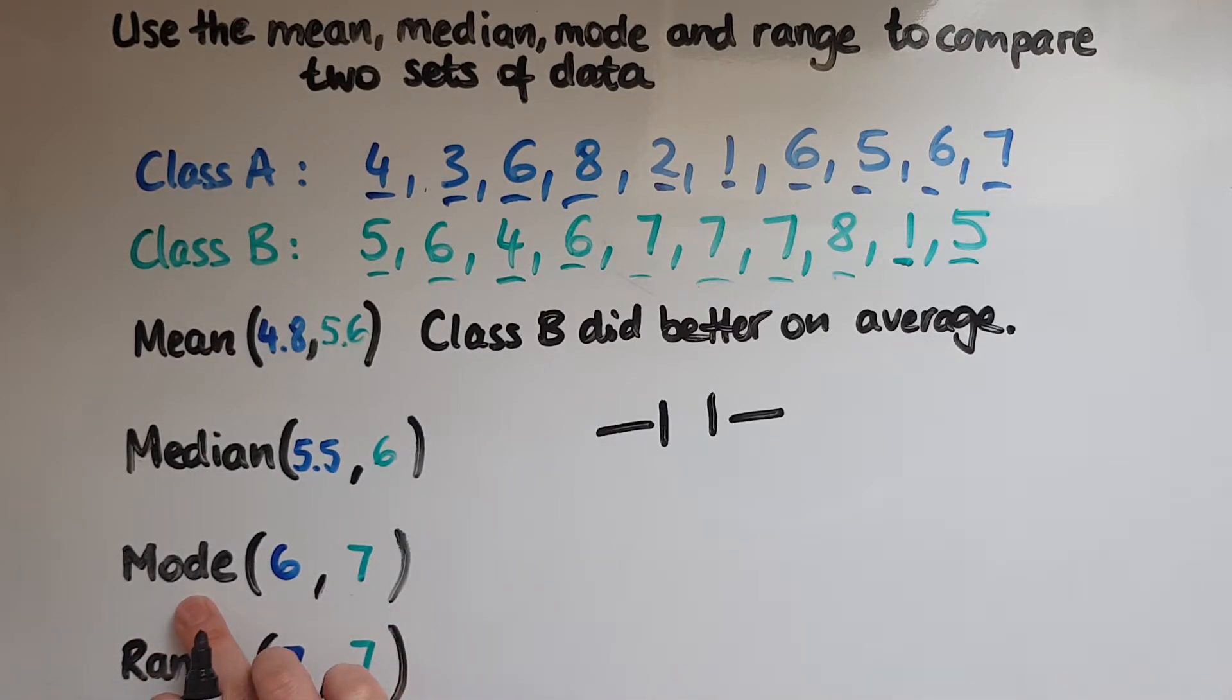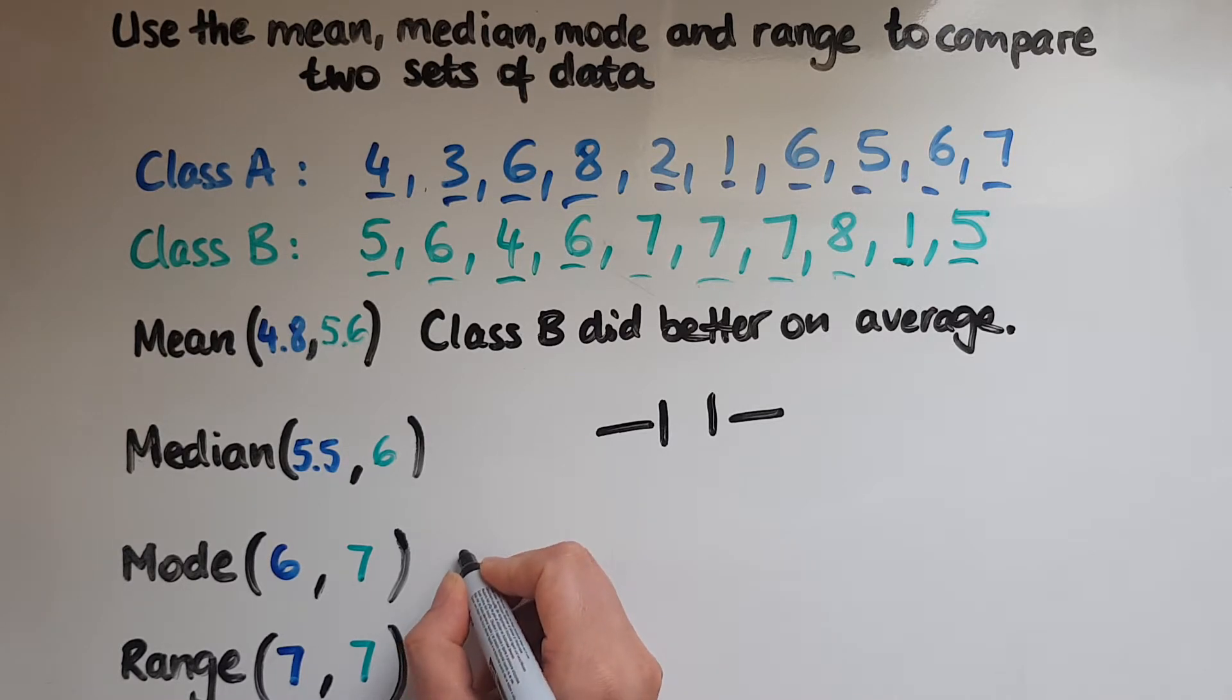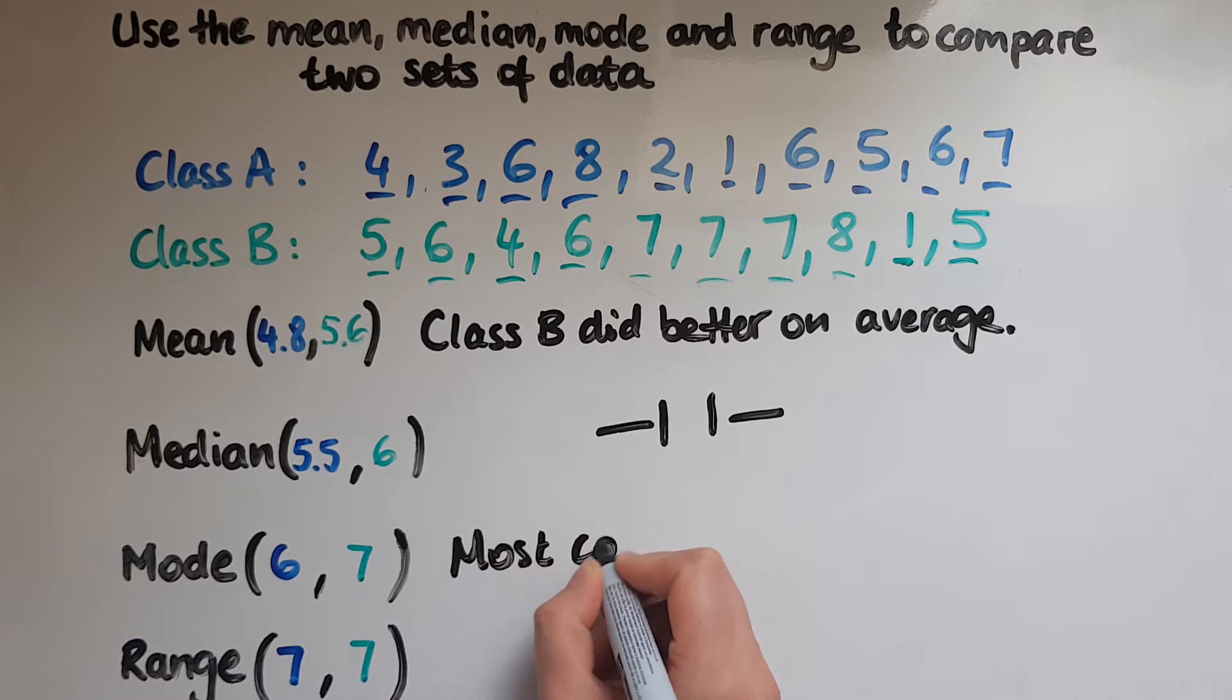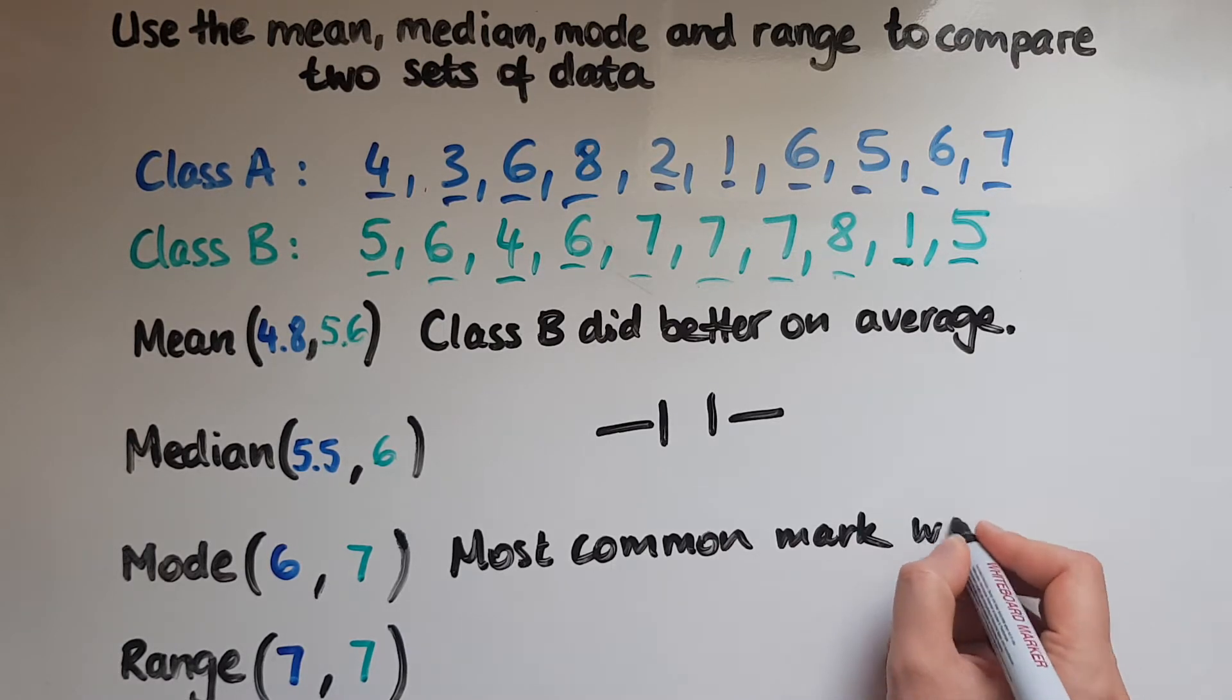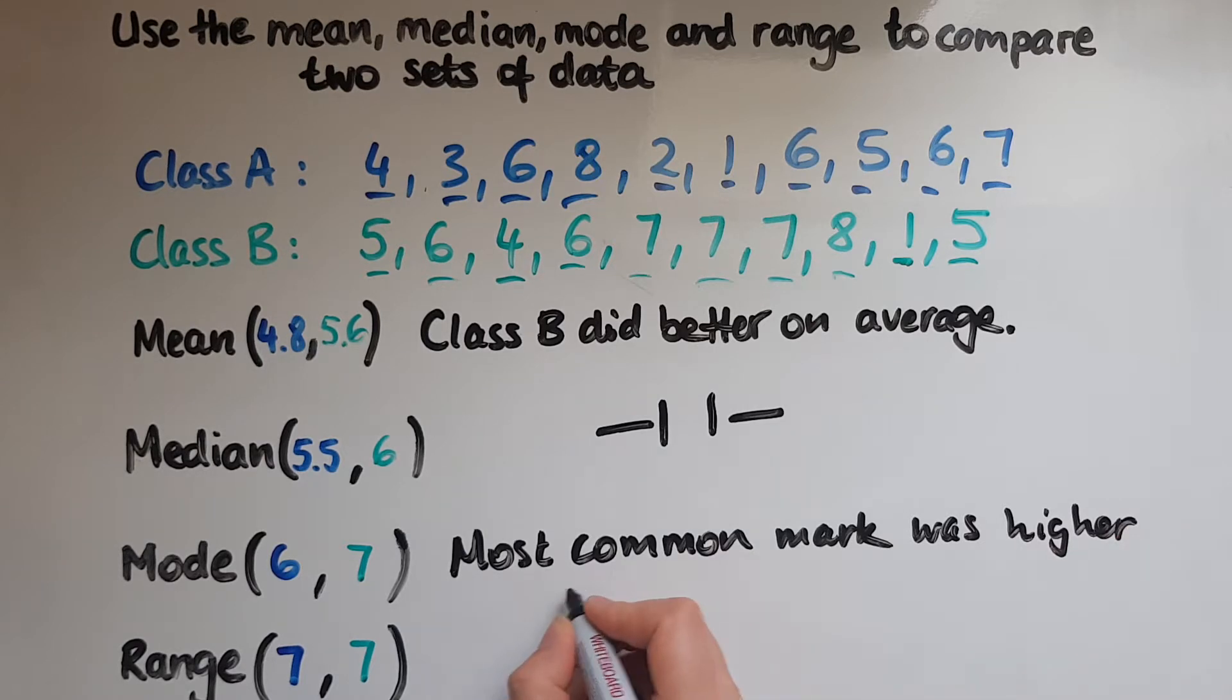In terms of the mode, which is the most common value, the most common mark, this shows that the most common mark for class B was 7, which was one mark higher than for class A. So in terms of the mode, we can say that the most common mark was higher in class B. That again supports the argument that class B did better.